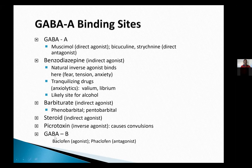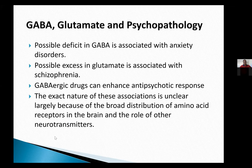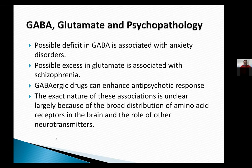For GABA-B, the agonist is baclofen and the antagonist is phaclofen — easily confused. Regarding psychopathology, it would not be an overstatement to say that GABA and glutamate form the basis of many different psychiatric disorders, because they are so ubiquitous throughout the brain and affect every mechanism and action. It is not surprising that they are involved in so many different psychopathologies.